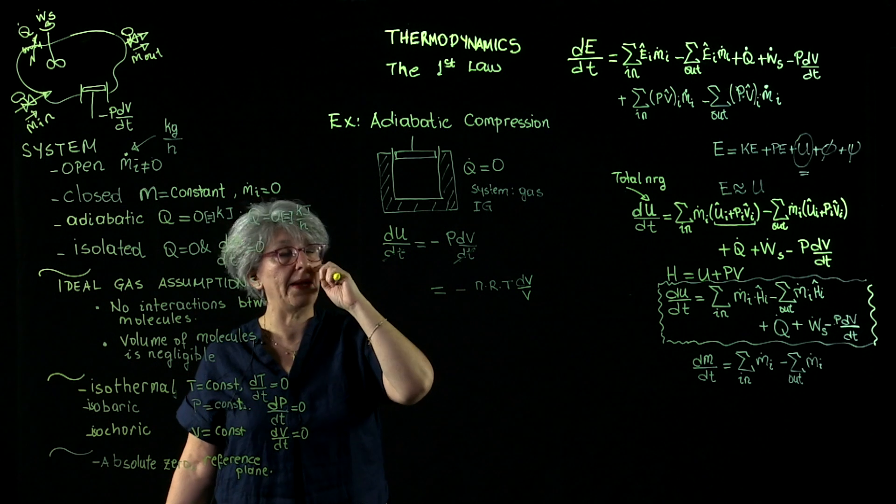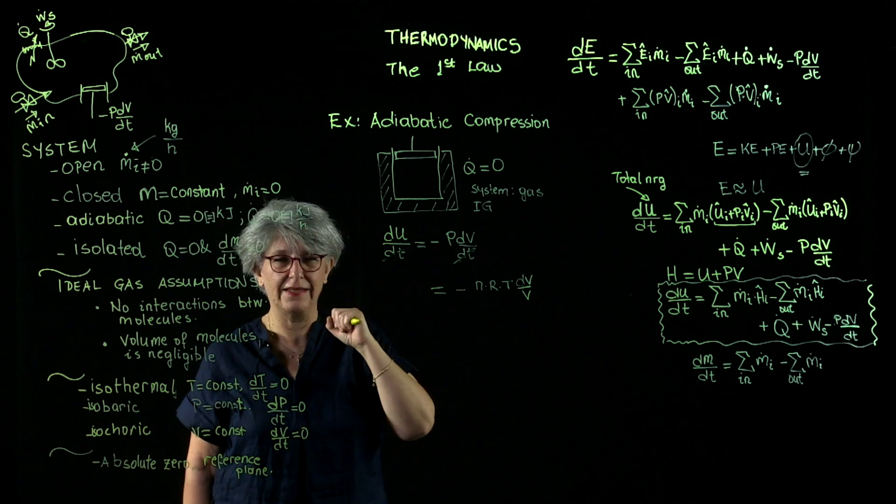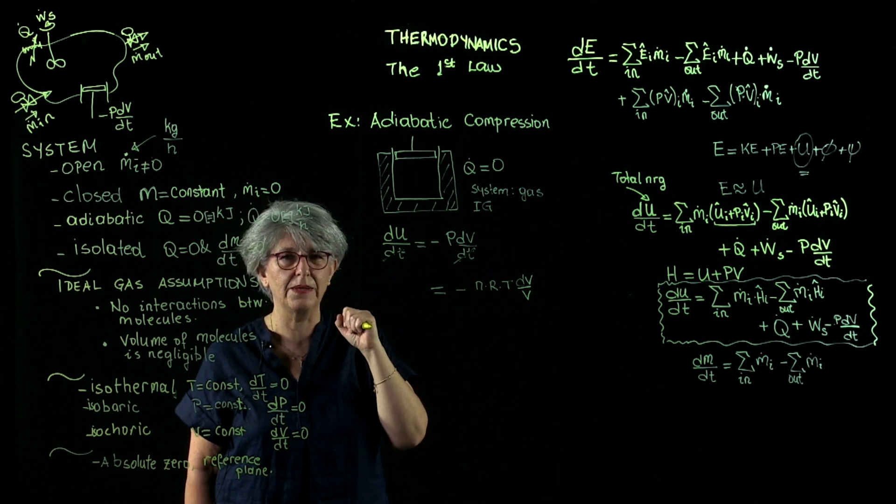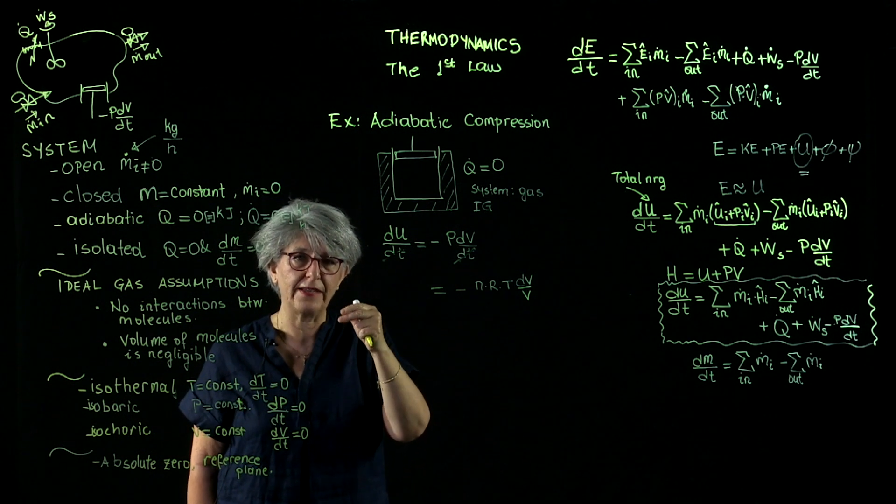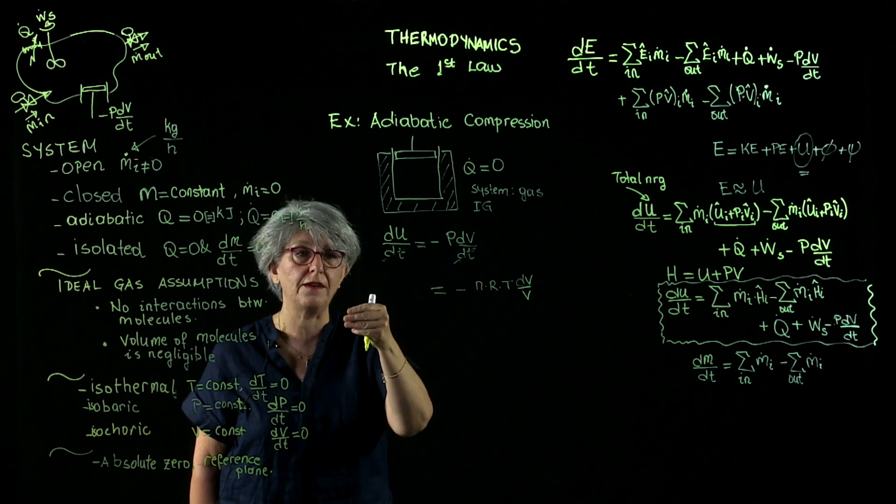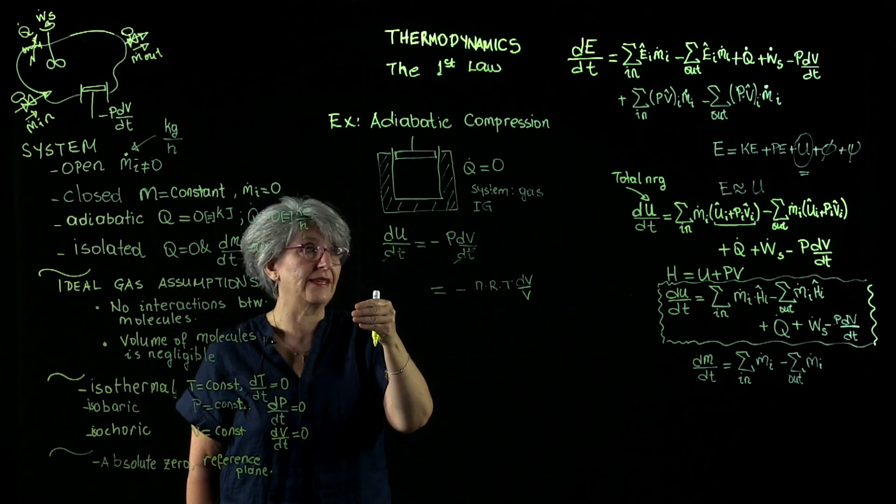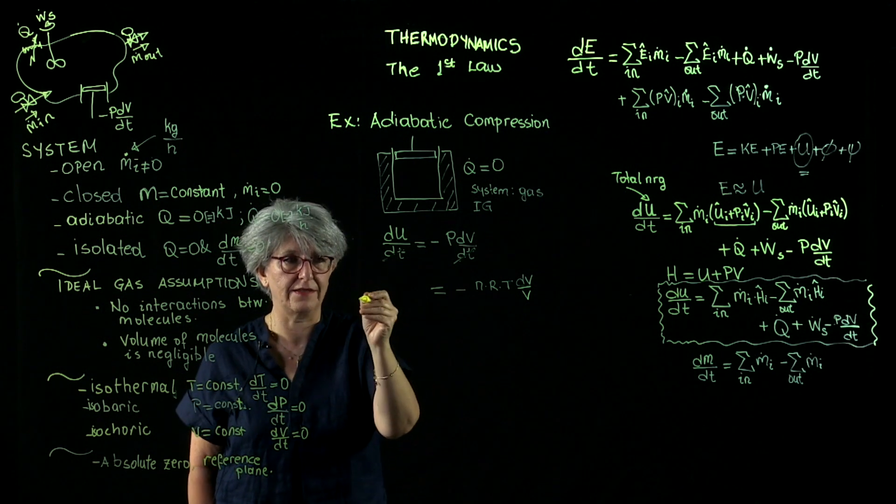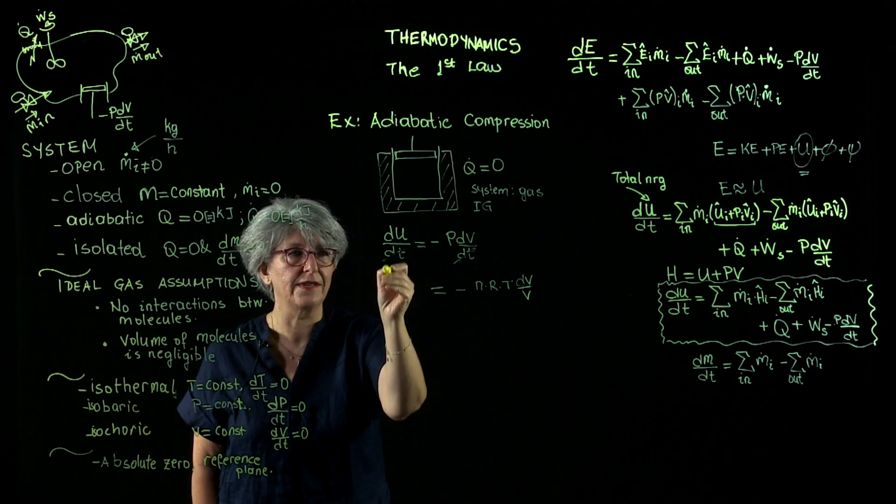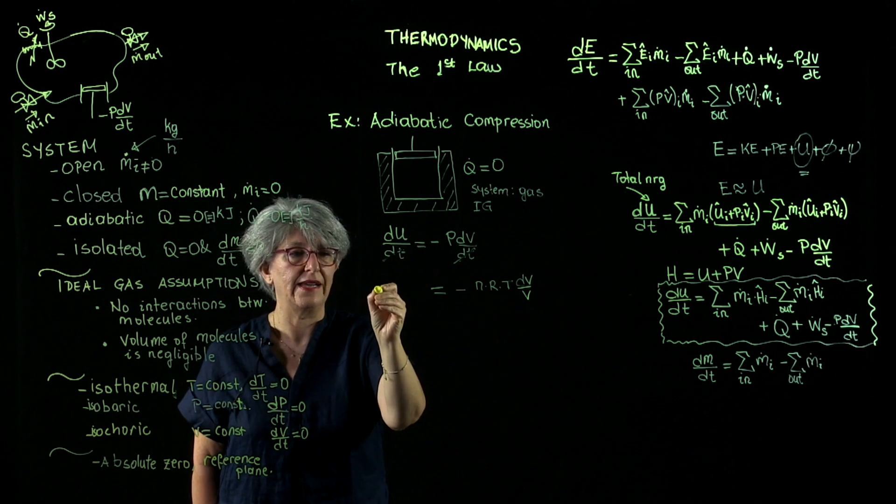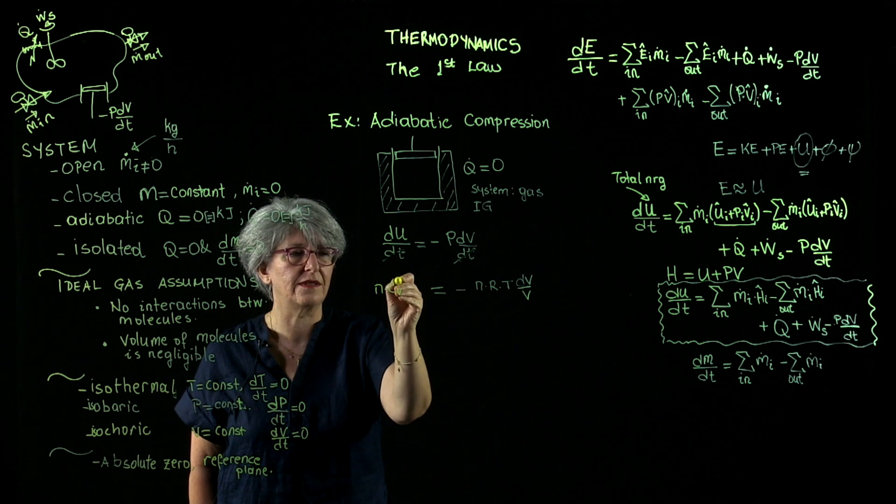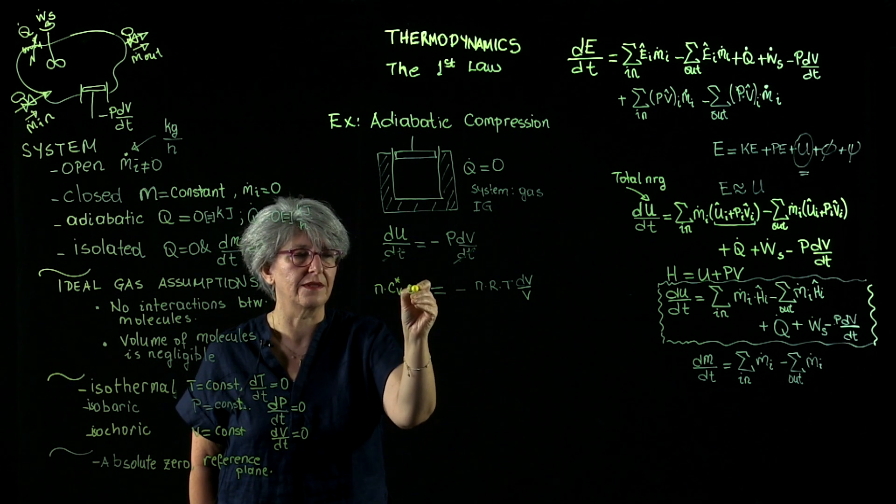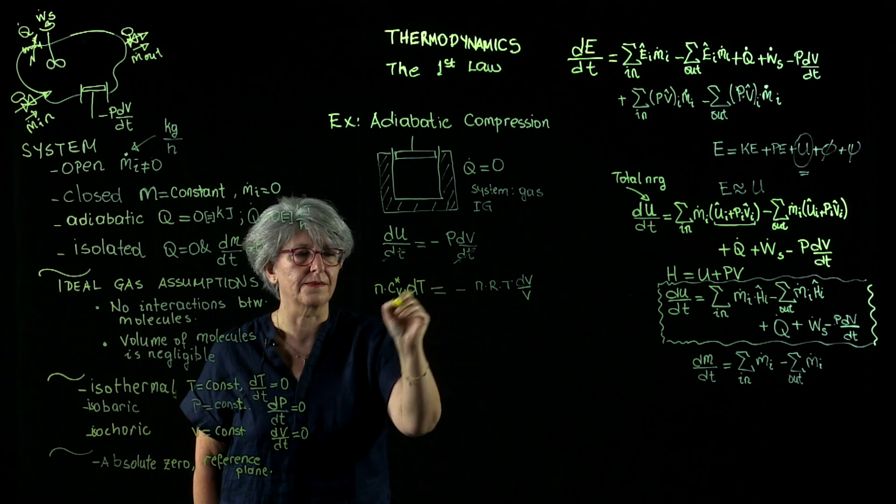On the other side, I remember I had another equation. Internal energy of an ideal gas was only a function of temperature, that du/dt was a constant. So I have, on this side, n times cv* times dt.